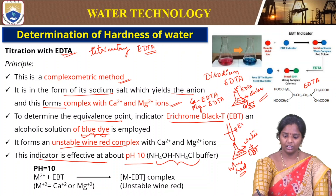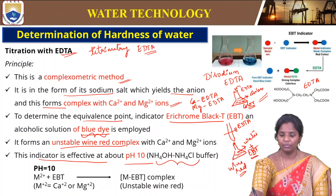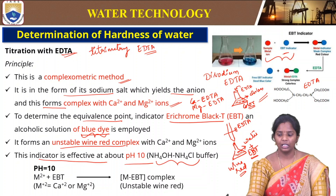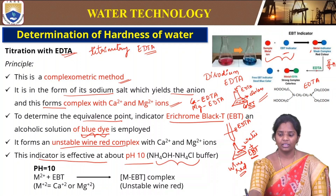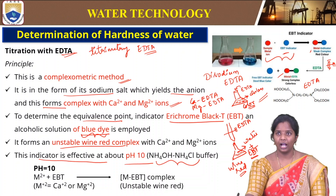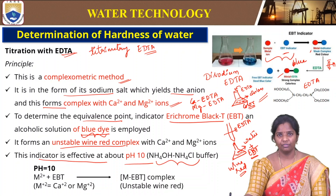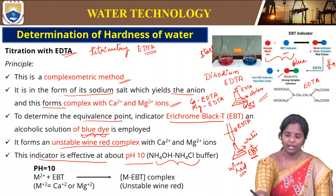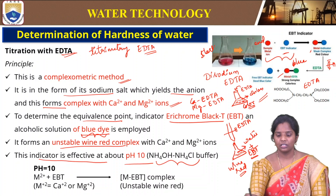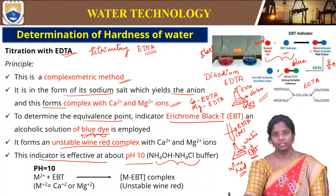Once we titrate with EDTA, it replaces the EBT ions and forms calcium-EDTA or magnesium-EDTA. The metal ion combines with the EBT indicator forming a metal-EBT complex. Upon titration with EDTA, a stronger metal-EDTA complex forms and the indicator is freed. The free EBT (blue) and the metal-EDTA complex are both blue, so the start point is wine red and the end point is steel blue. The volume at the end point is recorded.